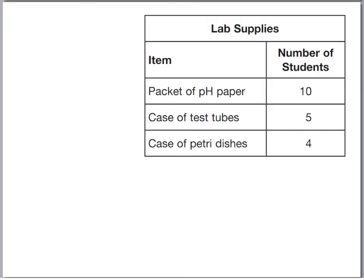We're going to use this table here to answer a couple of questions — some basic science lab supplies. Let's say there are 72 total students in the 5th grade. If there are 72 students, how many packets of pH paper do we need to order for everybody to have some? There are 10 in the pack and we have 72 students — that gets 7 packs with 2 remainder. We can't forget about those 2 students, so we'll need 8 packs of pH paper.